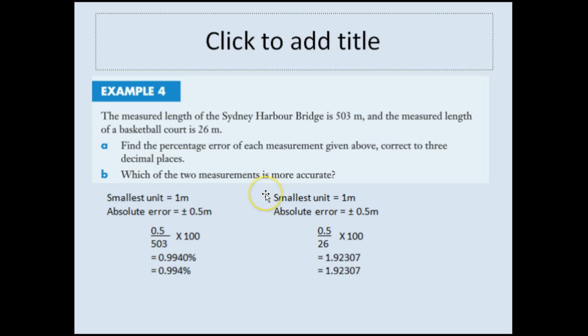If I'm looking at the basketball court, the smallest unit again is meters. So the absolute error is plus or minus half a meter. Putting that into my formula, that's 0.5 over 26 times 100, which gives me 1.92307%. And rounding that to three decimal places, 1.923%.